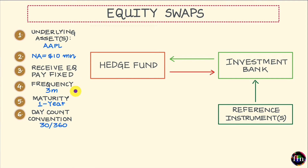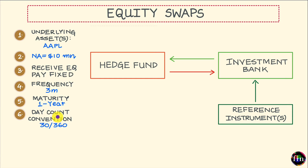The other attributes which have to be decided are: number four, the frequency of these exchanges — let's say these exchanges happen every three months; number five, the maturity of this swap — let it be one year; and number six, the day count convention — let it be 30 over 360.